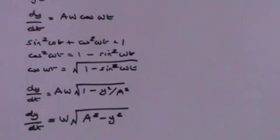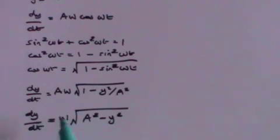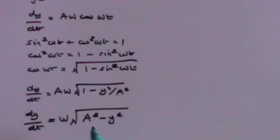The velocity is at a maximum when y equals 0 — that is, when there is no displacement. That is, when dy by dt, the velocity, is omega a.